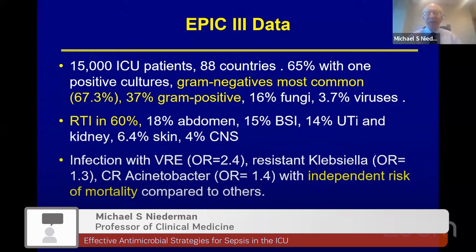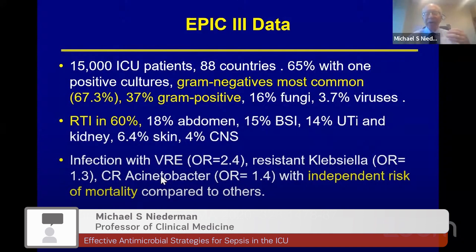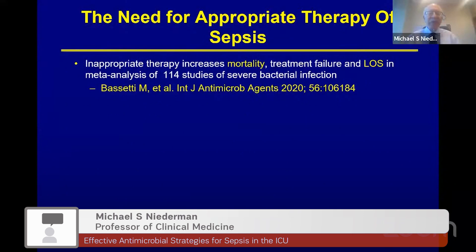Gram-positives were present nearly half as frequently as gram-negatives. Many had mixed infections; gram-negatives were present in 67%, fungi in 16%, and viruses in about 4%. The most common site of sepsis was respiratory tract infection, followed by abdominal infection, bloodstream infection, urinary and kidney infection, with skin and CNS infections less common. Infection with multidrug-resistant pathogens — particularly vancomycin-resistant enterococcus, resistant Klebsiella, and carbapenem-resistant Acinetobacter — were all associated with an independent risk of mortality.